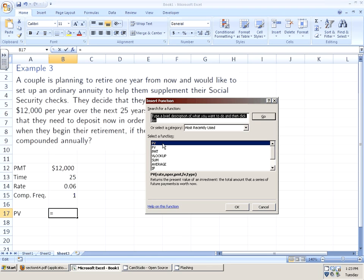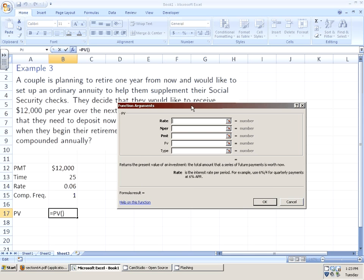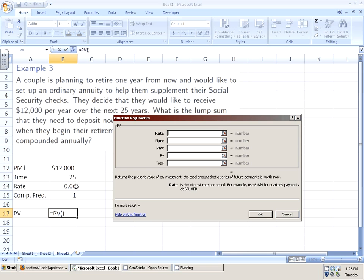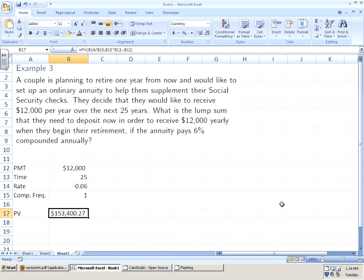So I'm going to insert the present value function here. If you don't have it in there, you can just type PV and hit go. It shows up at the top. Hit OK. And remember, as we've been doing it until now, the rate is just the interest rate divided by the compounding period per year. The number of periods is the compounding frequency one time a year times the time for 25 years. And I have a payment that's $12,000. But I need for it to be a negative number to get a positive dollar amount. So they need to deposit $153,400.27.